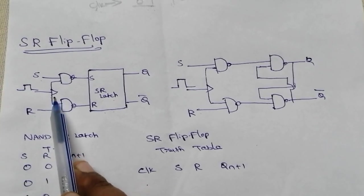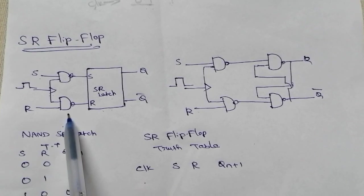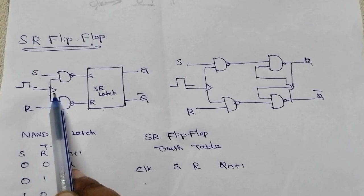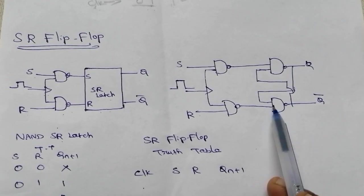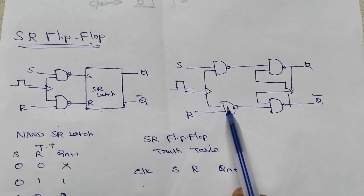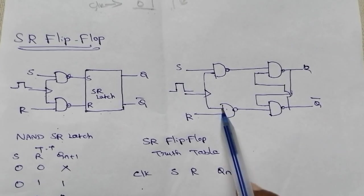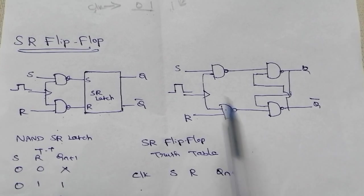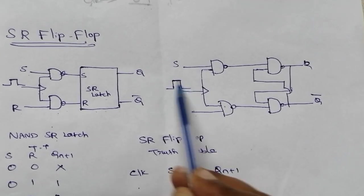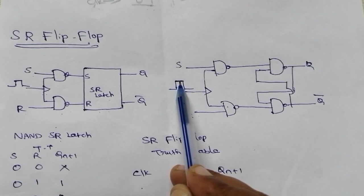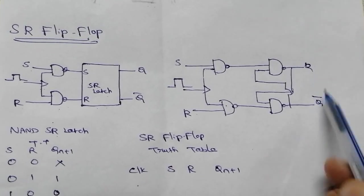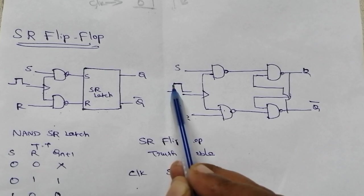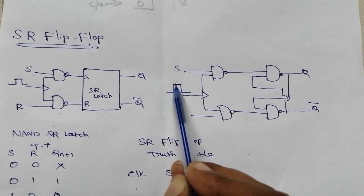The clock (CLAC) input is connected to both NAND gates, resulting in low outputs when the clock input is low. Here we apply positive level triggering, which means the next state change will occur only when the clock signal is at level 1.